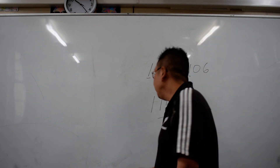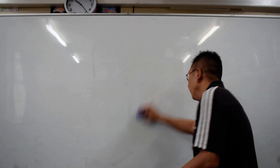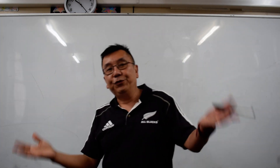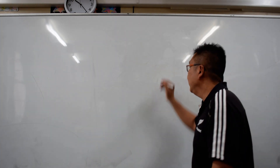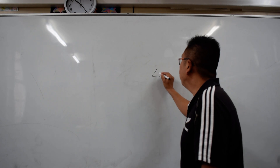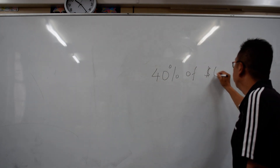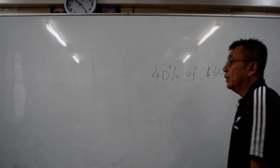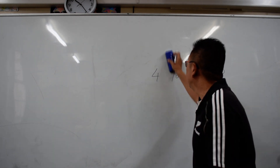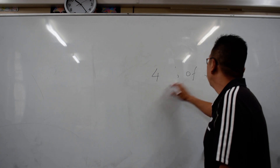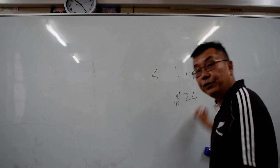The last thing I am going to do is a bit of simple percentages. Suppose you are in a supermarket and you do not have a calculator. So for 40% of $60, the shortcut is to just remove the zeros: 4 times 6 is $24.